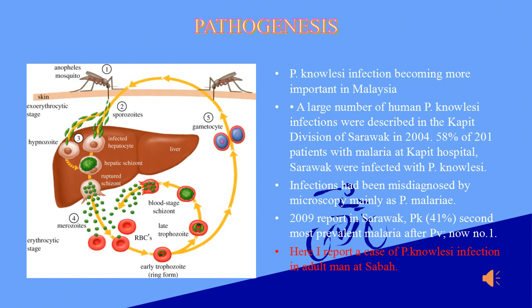Pathogenesis of Plasmodium knowlesi infection is becoming more important in Malaysia. A large number of human Plasmodium knowlesi infections were described in the Kapit Division of Sarawak in 2004. 58% of 201 patients with malaria at Kapit Hospital Sarawak were infected with Plasmodium knowlesi. Infections had been misdiagnosed by microscopy mainly as Plasmodium malariae. In a 2009 report in Sarawak, P. knowlesi was the second most prevalent malaria after Plasmodium vivax. Here I report a case of P. knowlesi infection in an adult man in Sabah.